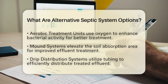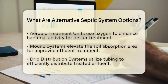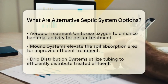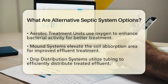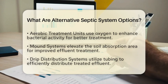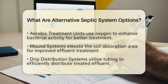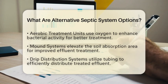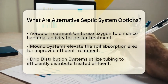The mound system is often used when the water table is too high for a conventional system to function properly. Drip distribution systems are also worth mentioning. These systems utilize drip tubing to distribute treated effluent into the soil. They are efficient in tight spaces and can work well with advanced treatment units.